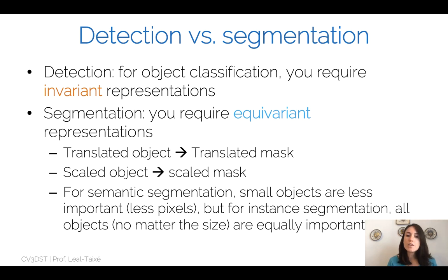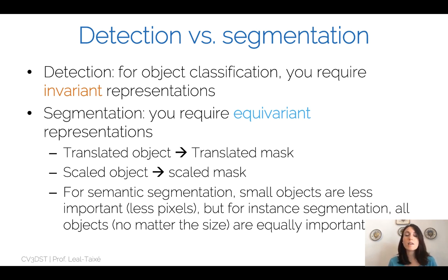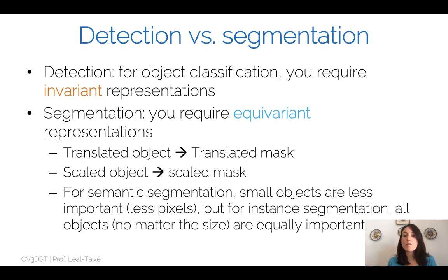The segmentation problem is slightly different: for every translated object I need a translated mask, and for every scaled object I need a scaled mask. Therefore I require equivariant representations. Also, for semantic segmentation small objects count less because they have fewer pixels in the loss function, but for instance segmentation all objects regardless of size are equally important — same as for object detection. So I need slightly different representations: an equivariant network rather than an invariant one.